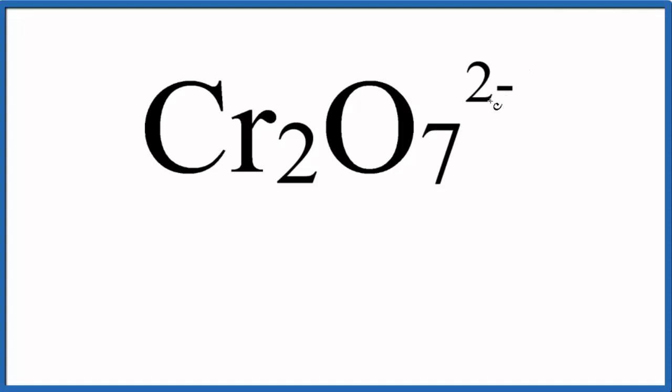The 2- up here tells us that if we add up all these oxidation numbers, it should equal minus 2. So we can put an equation here. We can start out by saying all of these are going to equal minus 2.